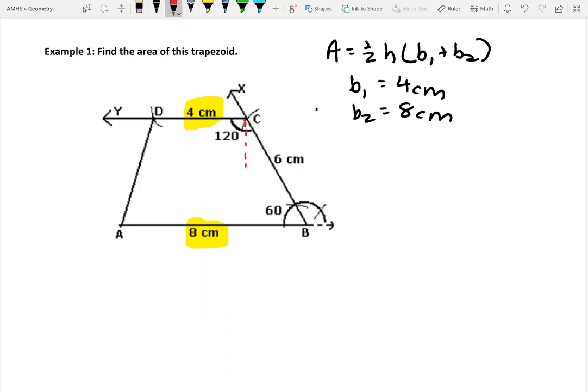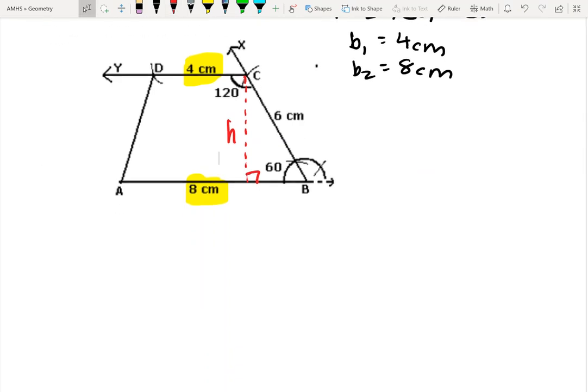I'm going to go ahead and sketch it in. This comes down perpendicular, and this right here, that length, is going to be the height. It's not given to us, so we're going to have to figure that out. We're going to use our skills from chapter 8, and we go back to our trigonometry to figure out how to get the height.